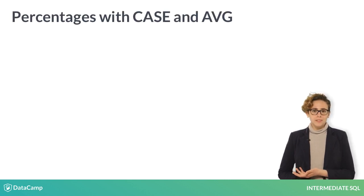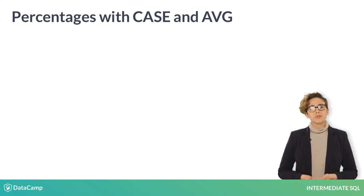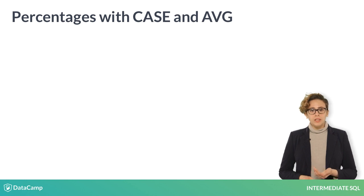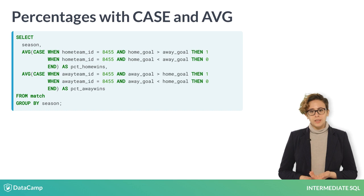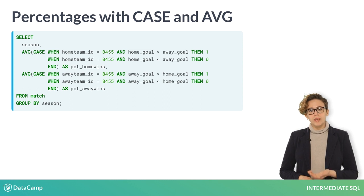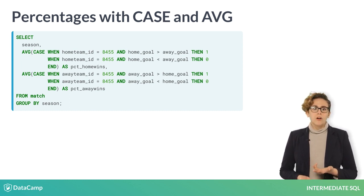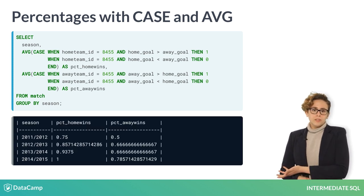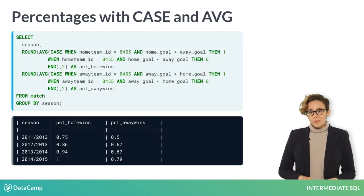The second key application of CASE with AVERAGE is in the calculation of percentages. This requires a specific structure for your calculation to be accurate. The question we're answering is: what percentage of Liverpool's games did they win in each season? The first component is a WHEN clause identifying what you're calculating a percentage of — how many games did they win — and your THEN clause returns a 1. The second component identifies Liverpool's games that they lost and returns a value of 0. All other matches — ties, games not involving Liverpool — are excluded as nulls. Here are the results of this query, and here's the rounded, more readable version.